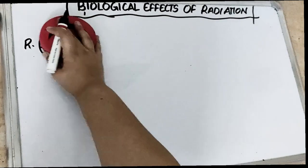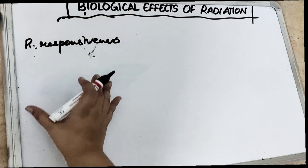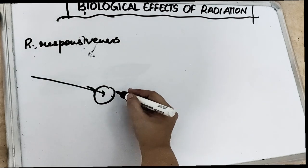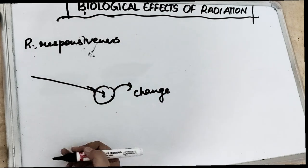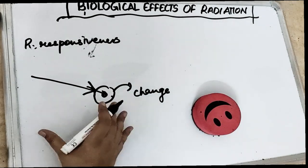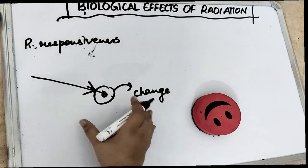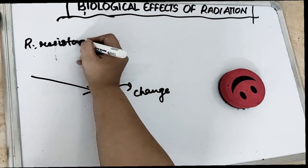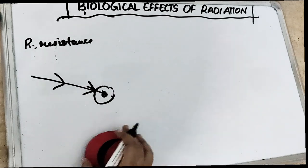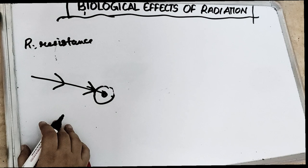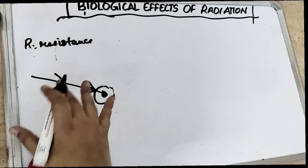Radio sensitivity is basically the response of the cancer cells — whether cells are undergoing any change due to radiation. Responsiveness is how quickly they are giving a response after the radiation — that is radio responsiveness. Radio resistance is how resistant the cells are; if radiation is coming but the cell is not changing at all, that is radio resistance — the level of ionizing radiation which that organism can withstand.